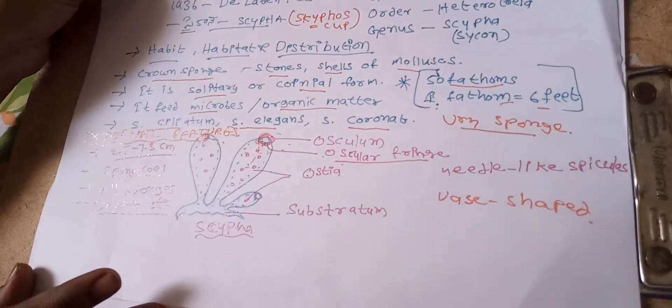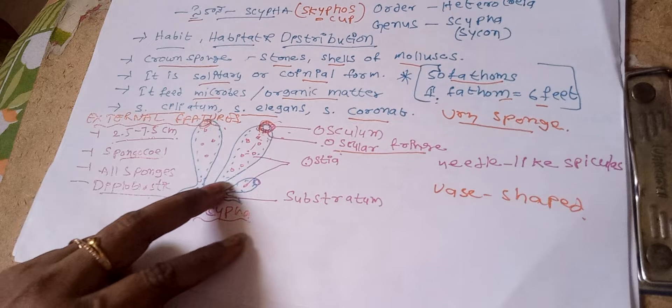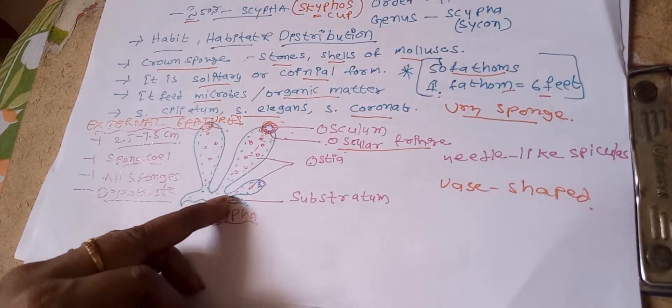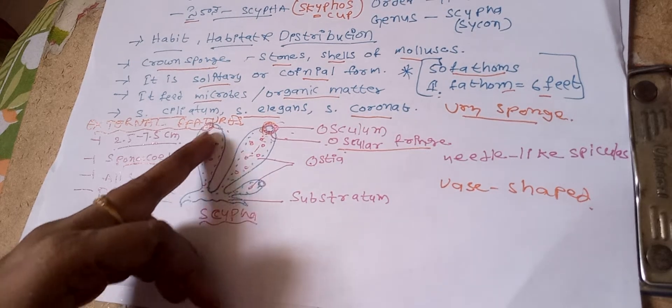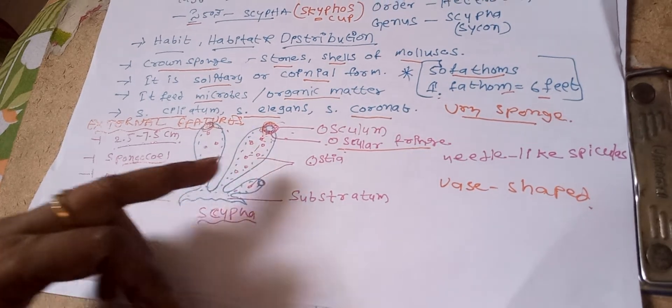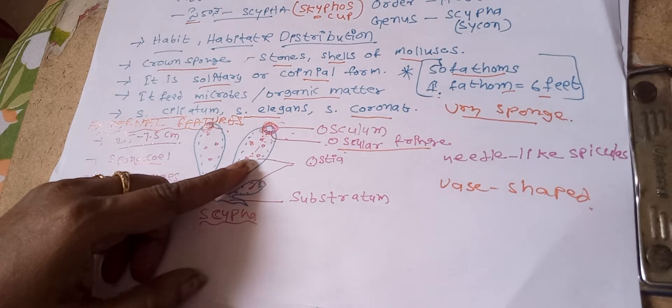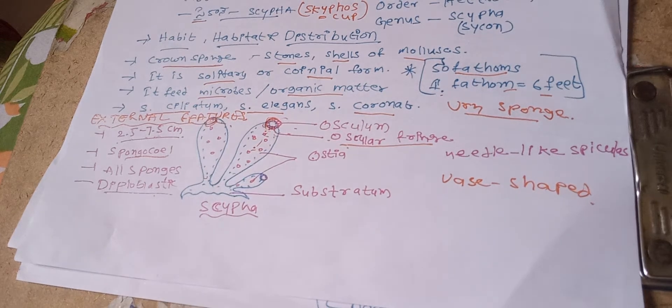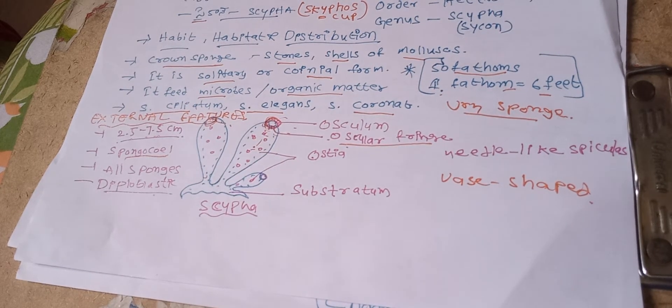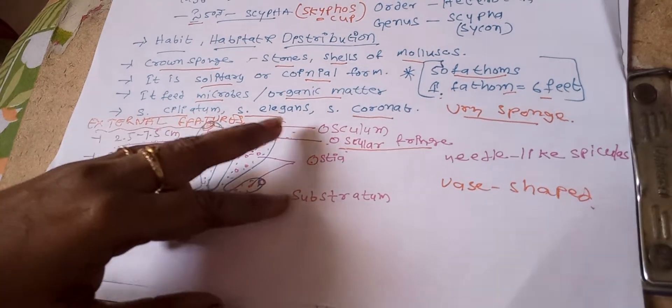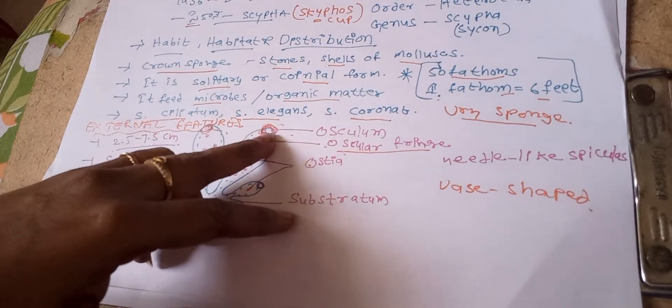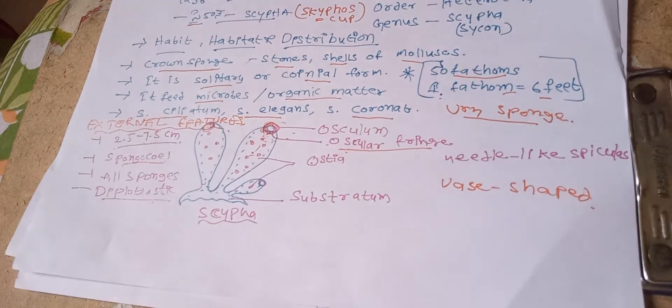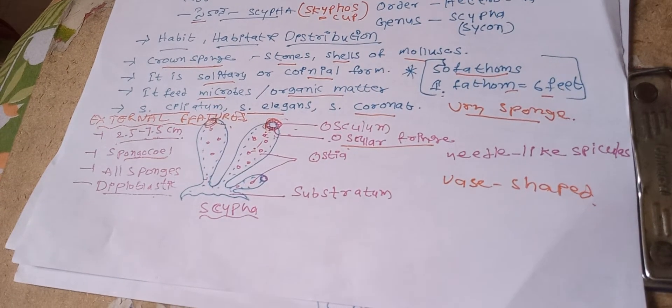Next, Scypha external characters. First structure: Scypha means substratum. Many branches are there. Every branch has many pores called ostia. Big opening at end of the body is called osculum. Osculum is encircled by needle-like spicules called osculum fringe.